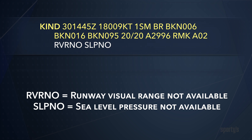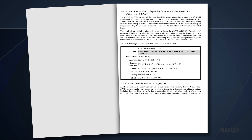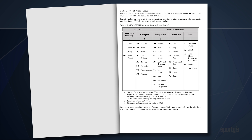Two exceptions to this are remarks used when runway visual range or sea-level pressure are usually reported but not currently available. The Aviation Weather Handbook has an entire chapter dedicated to METARs, where you can learn more about the details of each part of this report. This includes a helpful chart to decode the notations used for precipitation and other weather phenomena.